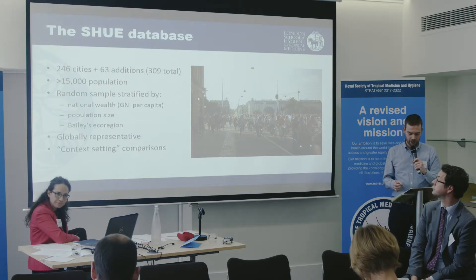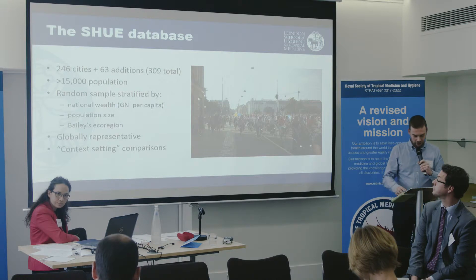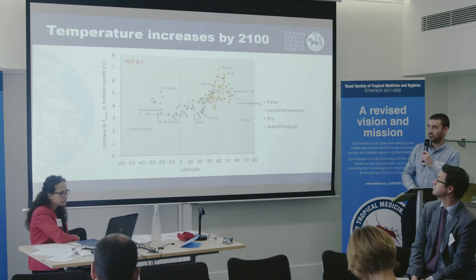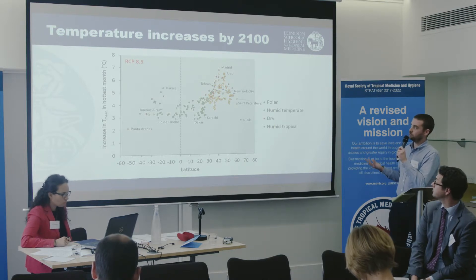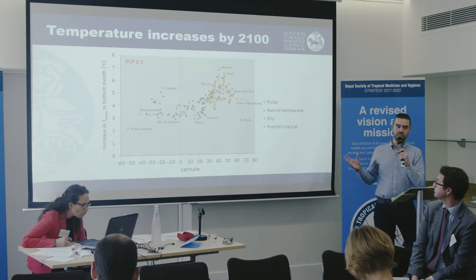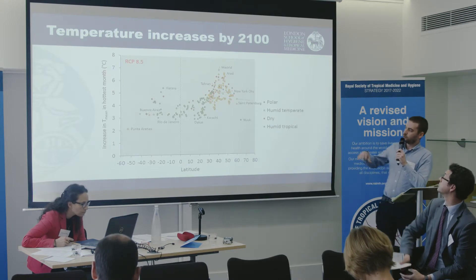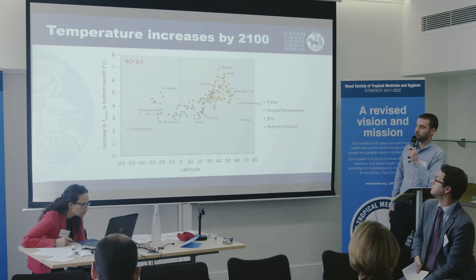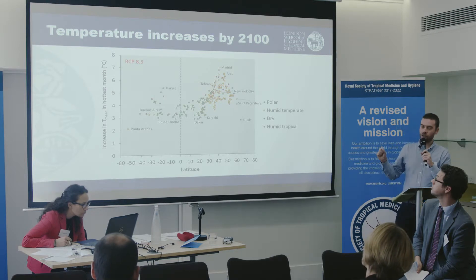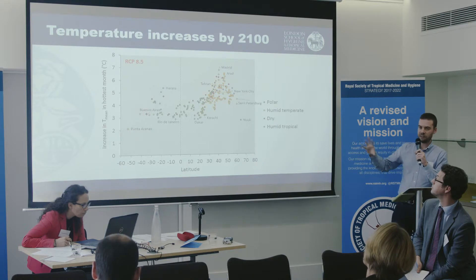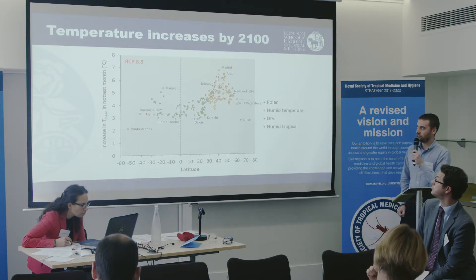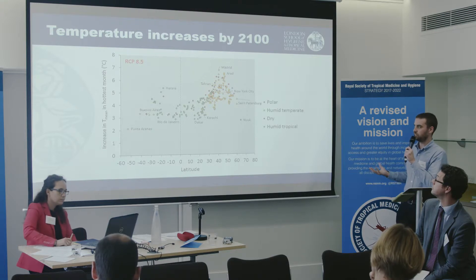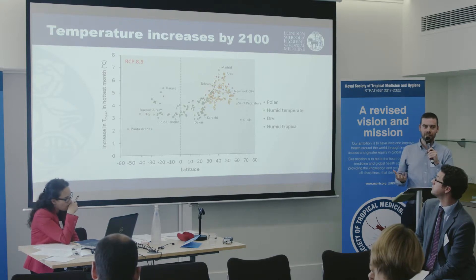Here are two brief examples of the type of data we've collected. This shows temperature increases in SHU cities by the end of this century under the high emissions RCP 8.5 scenario. On the y-axis is the increase in mean temperature in the hottest month — the average of average temperatures over the month, not the maximum. On the x-axis is latitude. You can see quite a clear relationship between latitude and the experience of climate change, with quite substantial variation across cities.